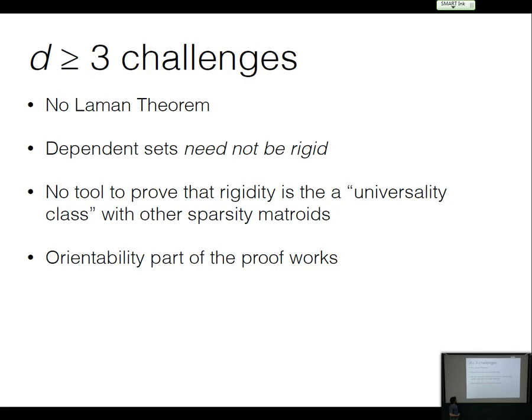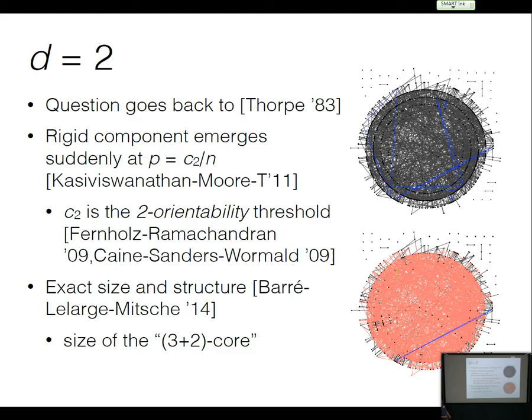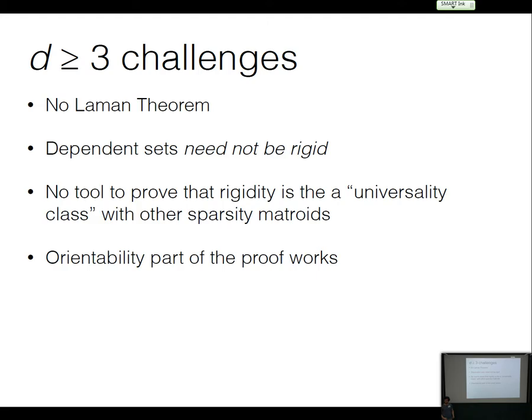But when you move to d = 3, the property breaks right away. In dimension 2, the circuits are all rigid, and the two-orientability threshold is the point where the three-core hits average degree four — if you've got average degree four you can't do two-orientability, you just have too many edges. So even getting started in dimension 3 doesn't work as well as you would hope: when the rigid component appears, this already just breaks.